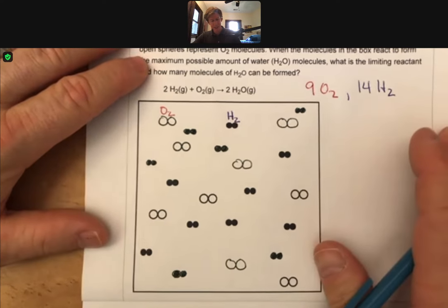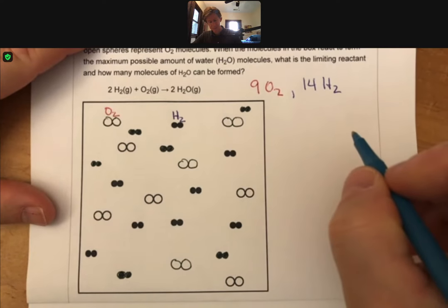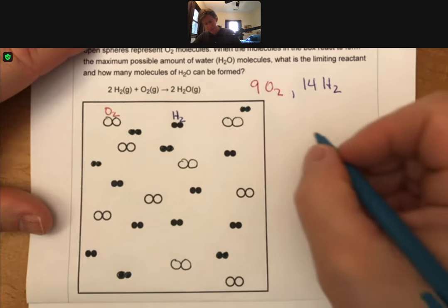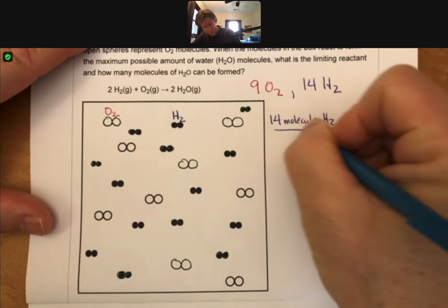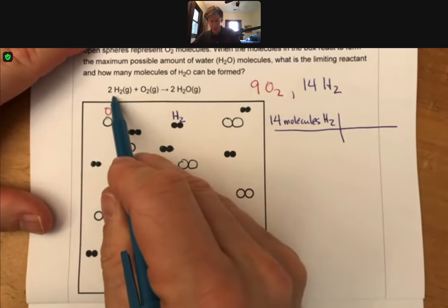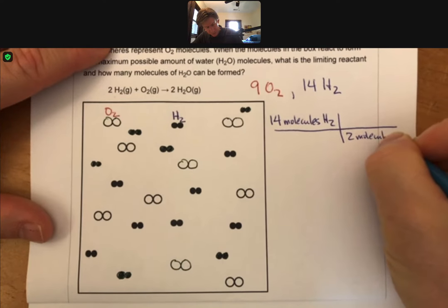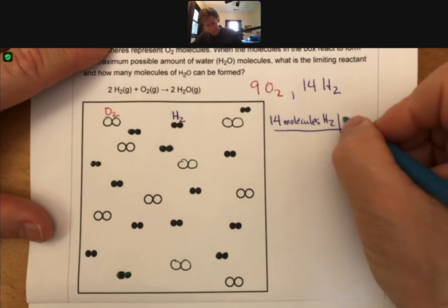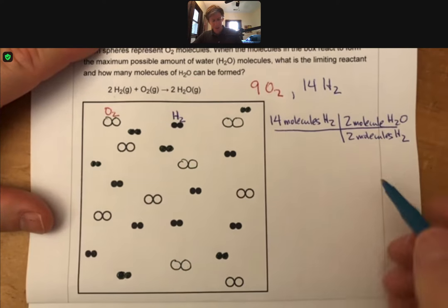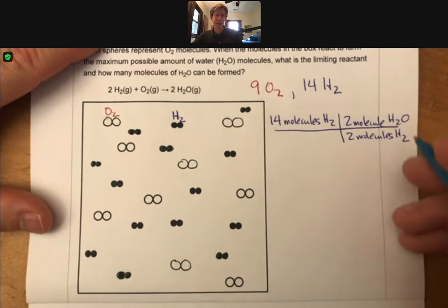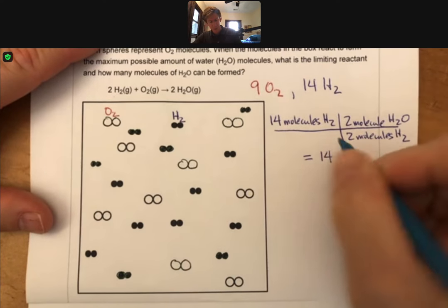What I can do is an exact analogy to the way in which I would do it if there was moles instead of molecules. I can take 14 molecules H2, and I know that for every 2 molecules of H2, I get 2 molecules of H2O, and that becomes a molecule conversion factor. This is exactly analogous to if these were moles, except now we're actually counting molecules.